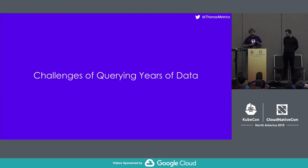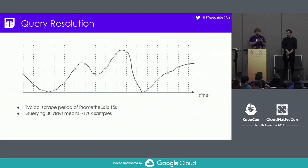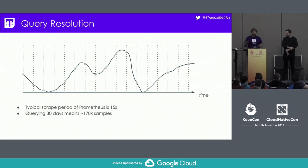As we learned from the Thanos intro and from Frederic, Thanos is designed to store and query virtually unlimited retention of your metrics. I'd like to focus on the challenges you might have while querying years of data in any Prometheus-based system. It all starts with dynamic query resolution. When you graph metrics in Grafana or the Prometheus/Thanos UI, having dynamic query resolution is very important, because data is probably scraped at high resolution like 15 seconds.